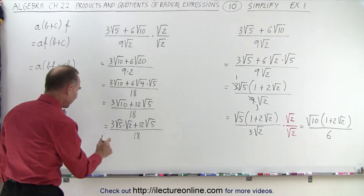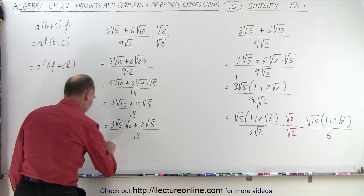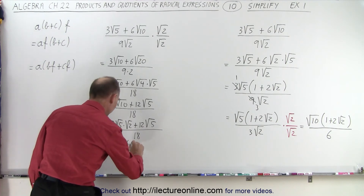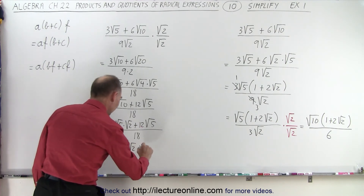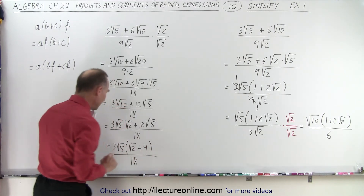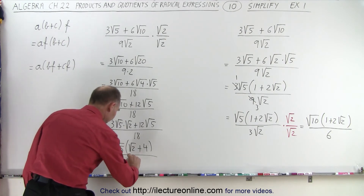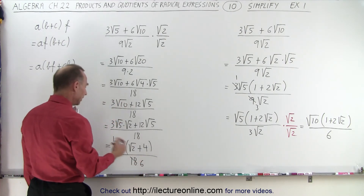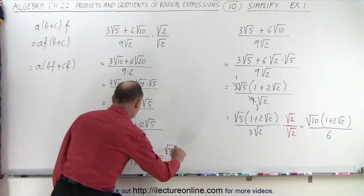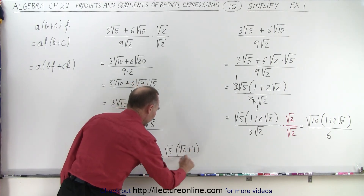What I can do now is factor out a 3 and the square root of 5. So this equals 3 times the square root of 5 times — in the numerator I end up with the square root of 2 plus 4 — all divided by 18. Then, dividing both the 3 and 18 by 3 gives me 6, so this equals the square root of 5 times (the square root of 2 plus 4) all divided by 6.